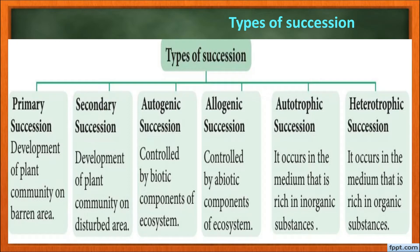Types of succession: Primary succession is the development of a plant community on a barren land. Secondary succession is the development of a plant community on a disturbed area. Autogenic succession is controlled by the biotic components of the ecosystem. Allogenic succession is controlled by the abiotic components. Autotrophic succession occurs in a medium rich in inorganic substances. Heterotrophic succession occurs in a medium rich in organic substances, where microorganisms invite heterotrophic organisms to live in that area.